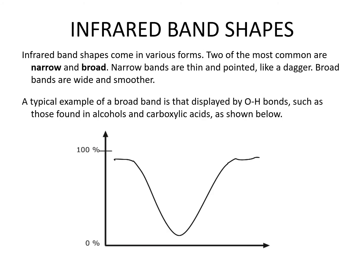Infrared band shape comes in various forms; two of the most common are narrow and broad. Narrow bands are thin and pointed, like a dagger. Broad bands are wide and smoother. A typical example of a broad band is displayed by the OH bands, such as those found in alcohols and carboxylic acids.